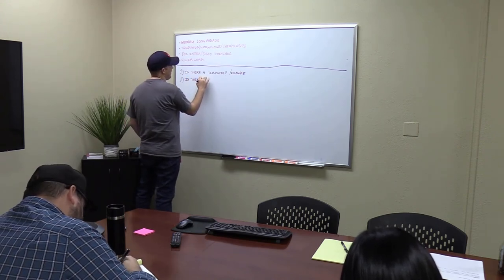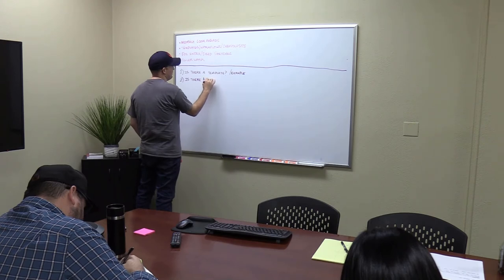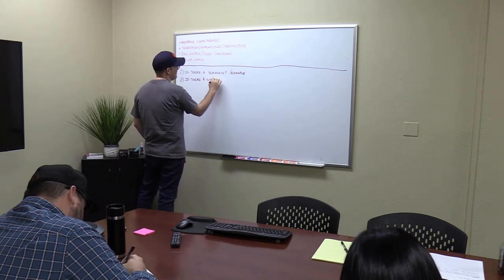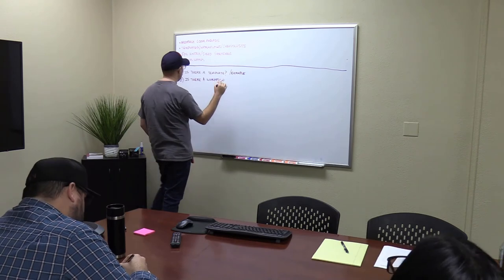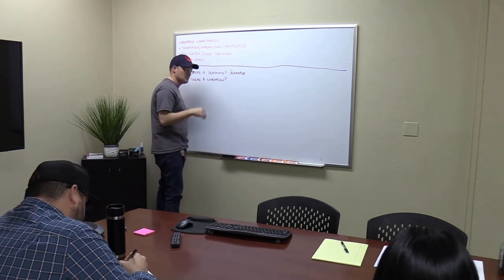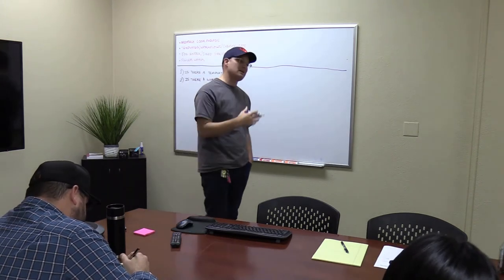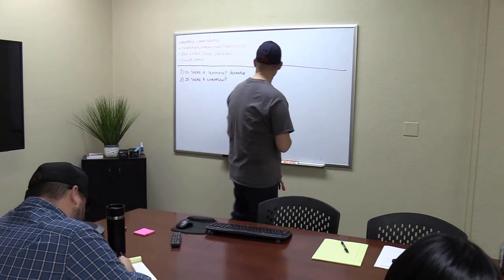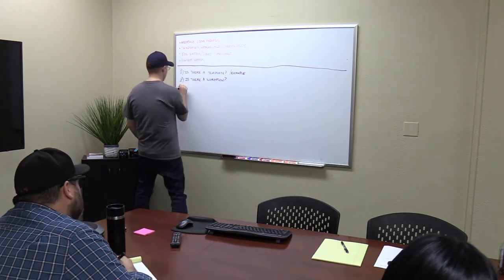Two, second question: Is there a workflow? Now we have one for land title surveys. So when you get a land title survey, you should know the order that things go in from start to finish. Doesn't mean it can't change, but you should have a rough idea.